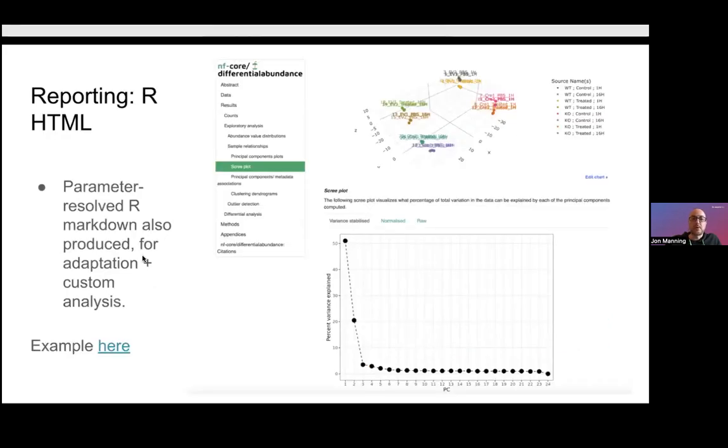One of the reporting outputs of the workflow is a HTML report derived from an R markdown file. Importantly, we also provide the R markdown file itself with all the parameters resolved at the end of the workflow, and that allows someone to take that markdown file and the results files that are bundled with it and customize it to do their own type of analysis or to tweak the plots, which can be quite a powerful thing to be able to do, because obviously we can't anticipate all the things that people might want to do in their reporting.